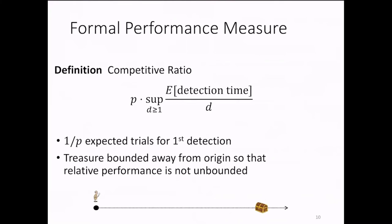For any placement of the treasure d away from the origin, d is at least one, we compute the expected detection time and we normalize by p over d, where p is the probability of successfully detecting the treasure with one trial. Taking now the supremum over all d at least one gives the so-called competitive ratio of the algorithm.